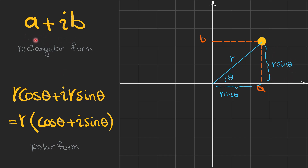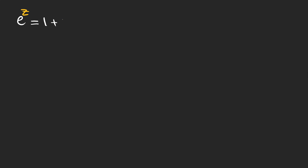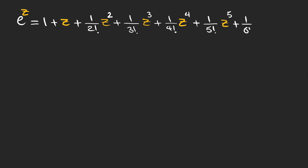We can write this complex number in polar form using r and theta. We can also write cosine theta plus i sine theta as e to the power of i theta, which is called Euler's formula. To prove this amazing formula that connects exponential functions to trigonometric ones, we can write the series expansions of the exponential function.